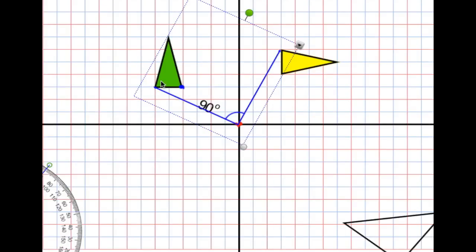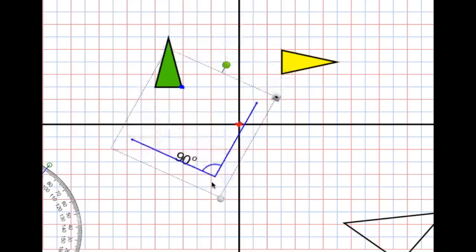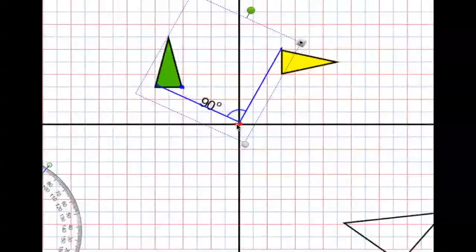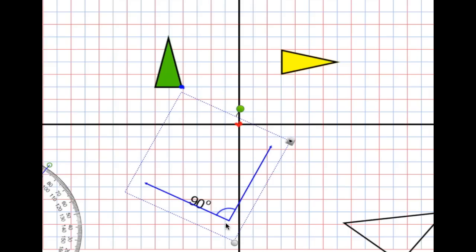So I could, if I'd rather, rotate each individual point of the shape and then connect them back up. Or I can just rotate my shape to a given number of degrees and then use my protractor and angle to find out exactly where it goes in the next quadrant. Hopefully that helps, and we'll talk to you soon.